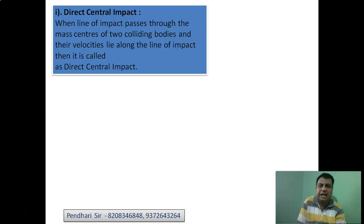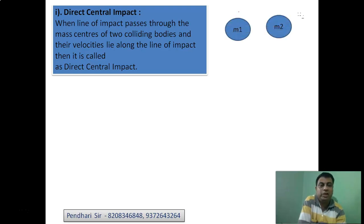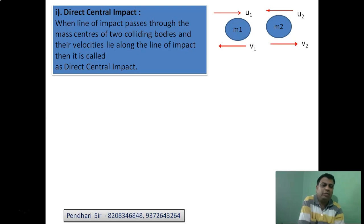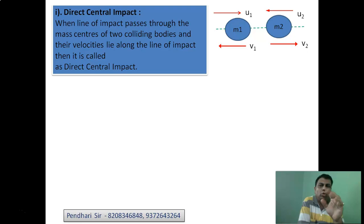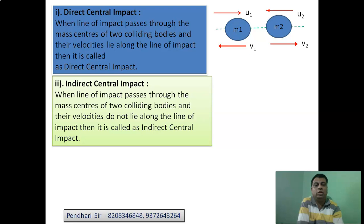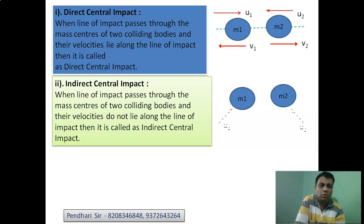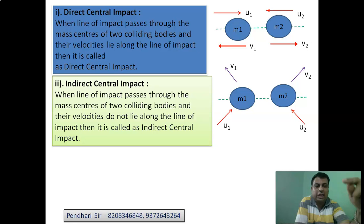Central impact is further classified into direct central and indirect central. In direct central impact, the line of impact passes through both mass centers AND the velocities are along (parallel to) the line of impact. For example, two bodies M1 and M2 with velocities U1 and U2 approaching along the line of impact, separating with V1 and V2 along the same line — that is direct central impact. In indirect central impact, the line of impact still passes through both mass centers, but the velocities are inclined (not along the line of impact). After collision the bodies move at angles, and the velocities are inclined to the line of impact.